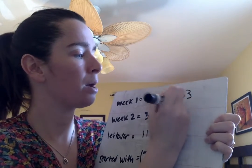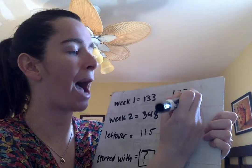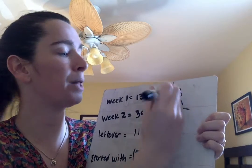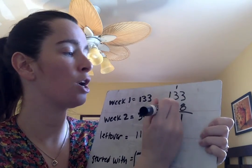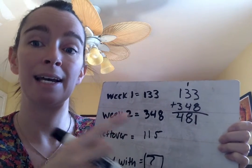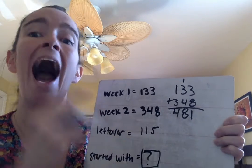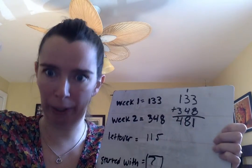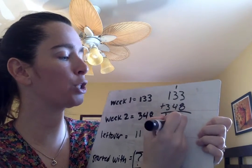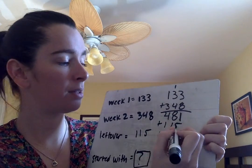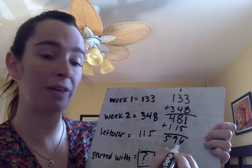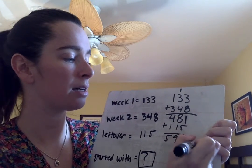So 133 plus 348. I know 8 and 3 makes 11, I drop the 1 and carry my group of 10. 3 and 4 makes 7, plus 1 is 8, so we have 8 tens. 3 and 1 makes 4. So I know Angel already gave out 481 eggs. Now he still has 115 left over, so I need to add that in. 5 and 1 make 6, 8 and 1 make 9, 4 and 1 make 5. So Angel started with 596 eggs.